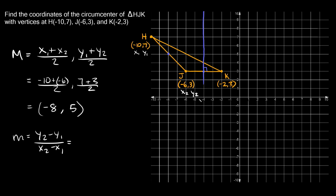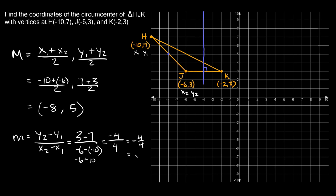On top, 3 minus 7 equals −4. On the bottom, −6 minus −10 is the same as −6 plus 10, which equals positive 4. So the slope equals −4 over 4, which reduces to −1 over 1. I'll leave it as a fraction because we need to do something with it — the slope of HJ is −1/1, or simply −1.